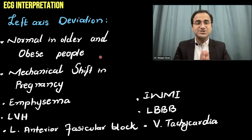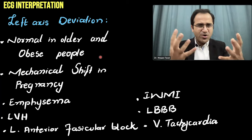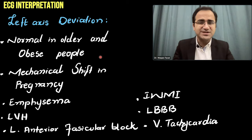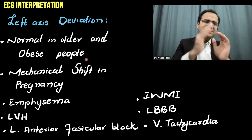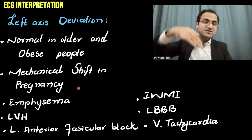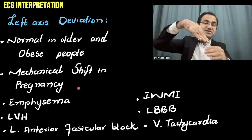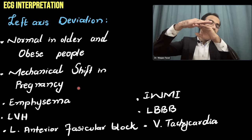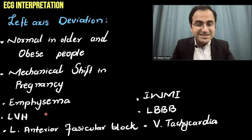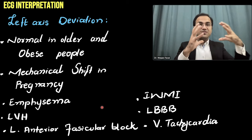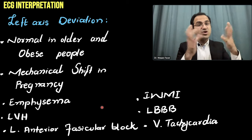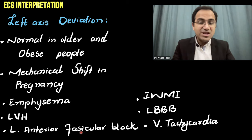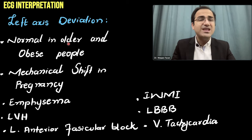Now the causes of left axis deviation: myocardial infarction, hypertrophies, and bundle branch blocks all cause axis deviation. Left axis deviation can be normal in older and obese people. Physiologic deviation from 0 to minus 30 degrees can also occur in pregnancy, as the swelling uterus pushes the heart upward causing left axis deviation. Other causes include emphysema, left ventricular hypertrophy, left anterior fascicular block, inferior wall MI, left bundle branch block, and ventricular tachycardia.